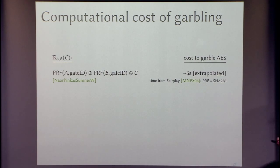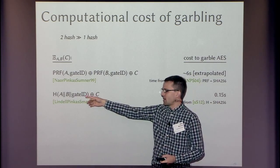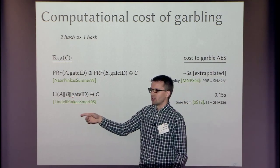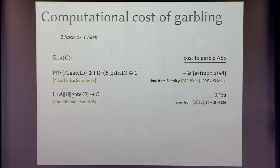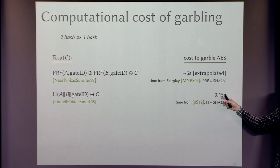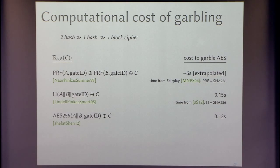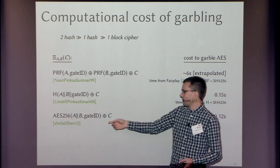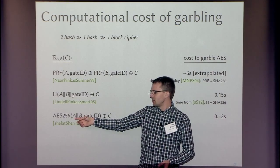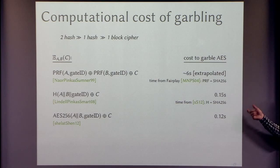One hash is better than two, so another approach hashes everything together as a random oracle mask on the payload — suggested by Lindell, Pinkas, and Smart. An implementation by Shelat and Shen in 2012 used SHA-256; with eight years of faster hardware, this took tenths of a second to garble AES. Since block cipher implementations are faster than hash functions, we can use AES-256 with a 256-bit key matching two wire labels — that's about 30% faster thanks to hardware-accelerated AES instructions.